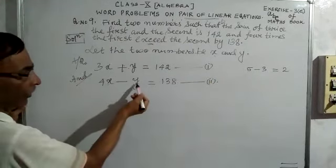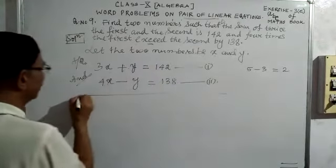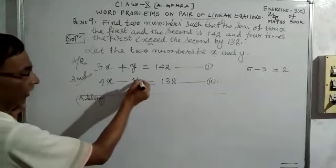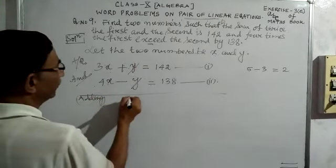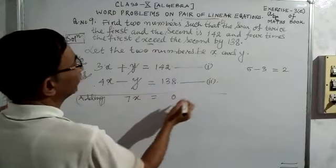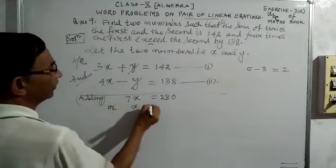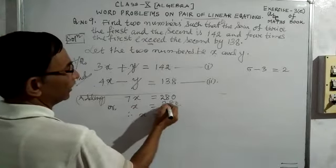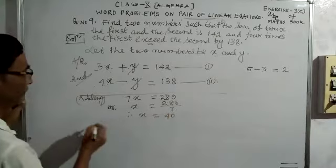The coefficient of y in Equation 1 is +1 and in Equation 2 is −1 — same coefficient but opposite in sign, so we can add them and y will cancel. Adding Equation 1 and 2: 3x + 4x = 7x, and 142 + 138 = 280. So 7x = 280, which gives x = 280 ÷ 7 = 40.